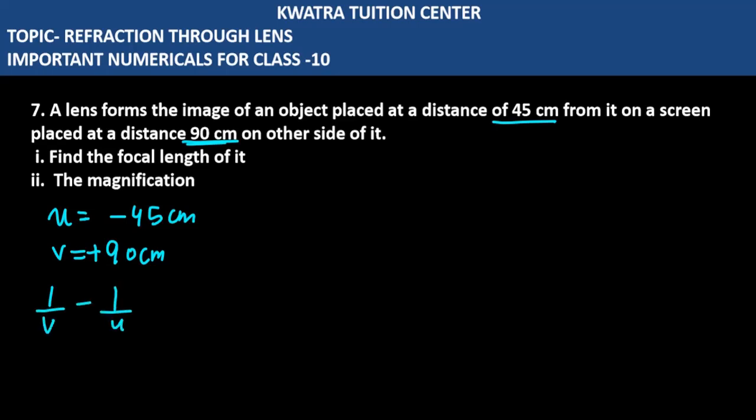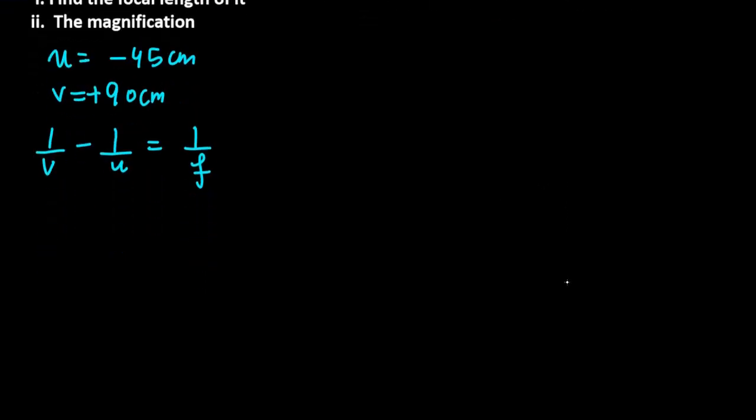This will be 1 over V minus 1 over U equals 1 over F. So V and U are already at a value. V is 90, U is minus 45, and you will get the focal length. So 45 and 90, first term as it is, second term you will get minus 2 equals 1 by F.